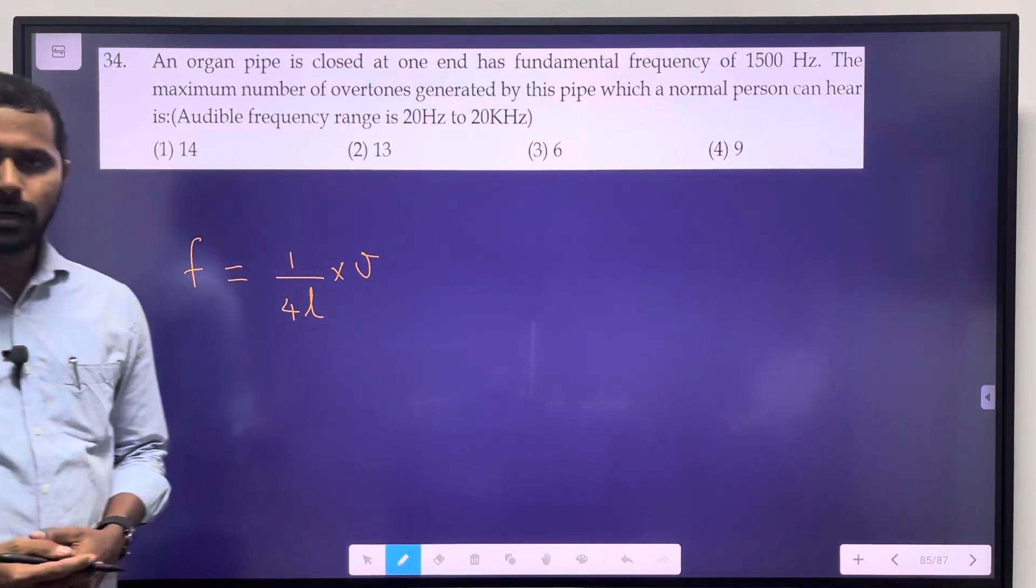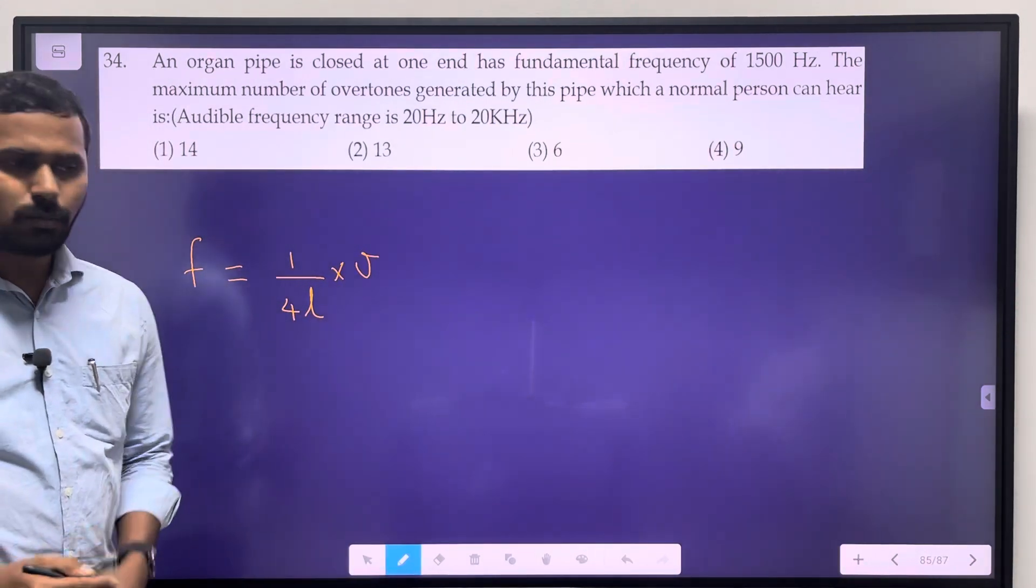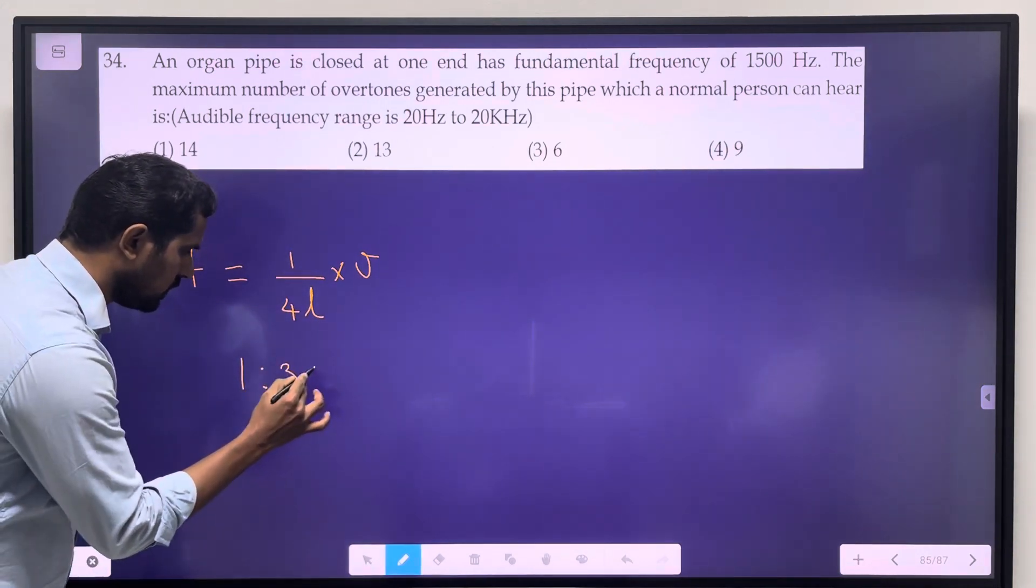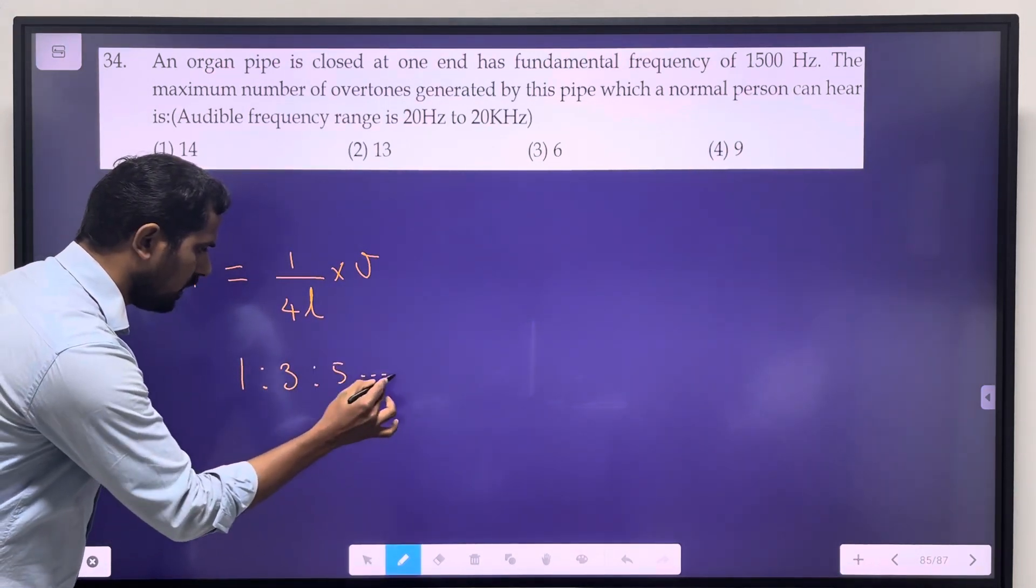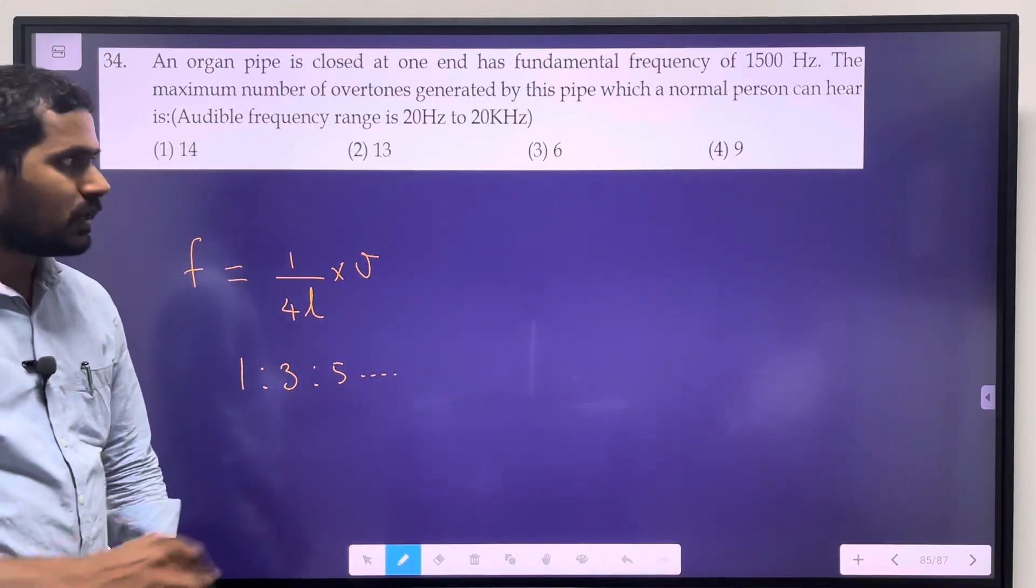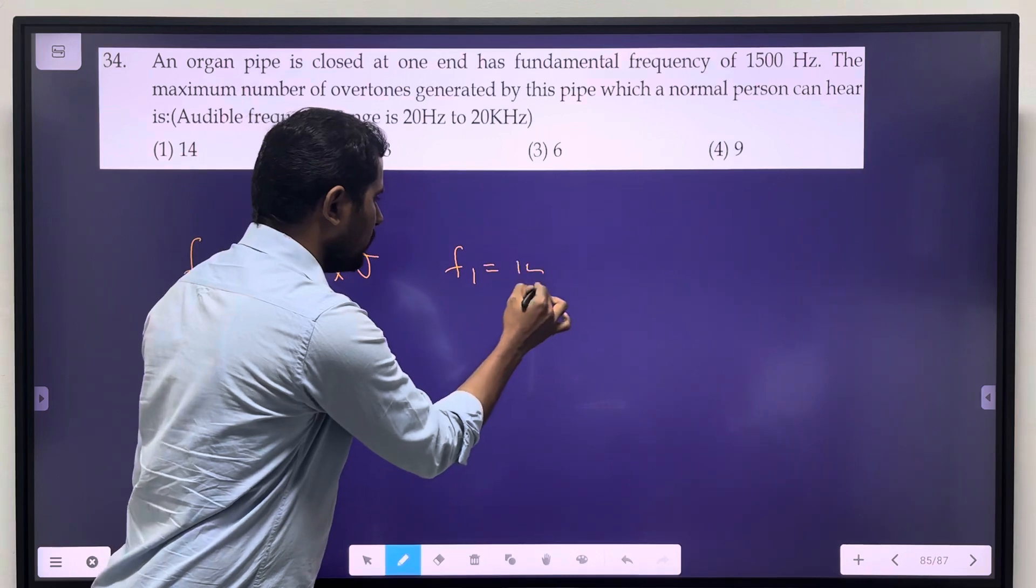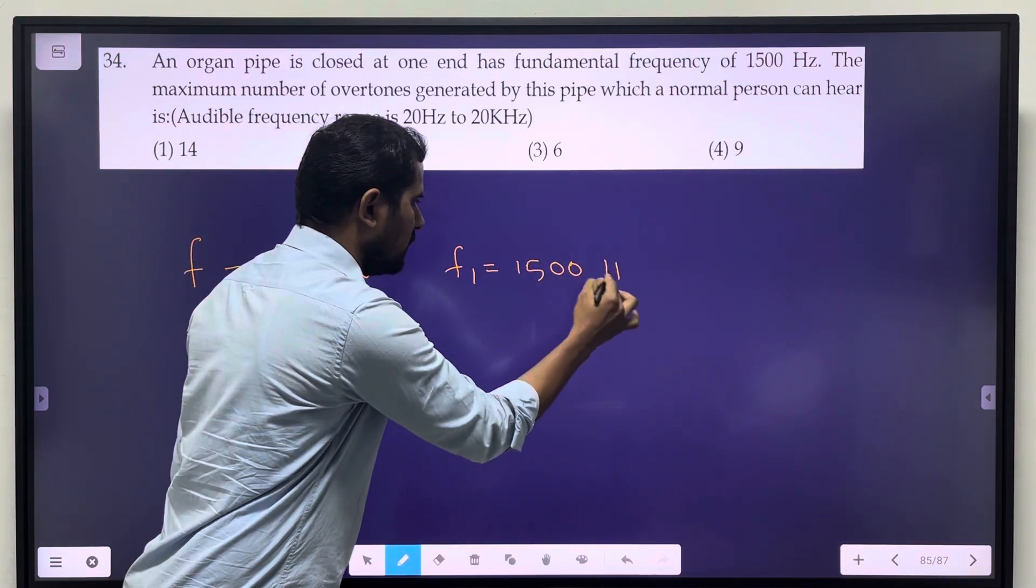A closed organ pipe generates only odd harmonics: 1 to 3 to 5 and so on. Now we have the fundamental frequency f1 equal to 1500 Hz.